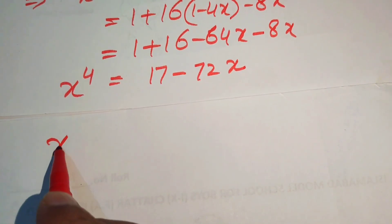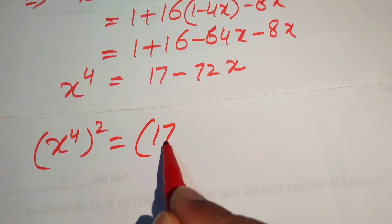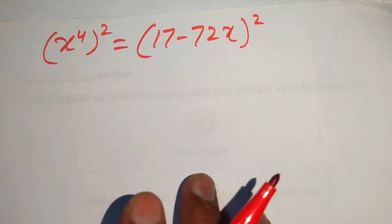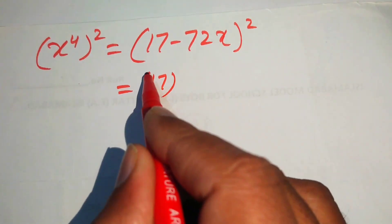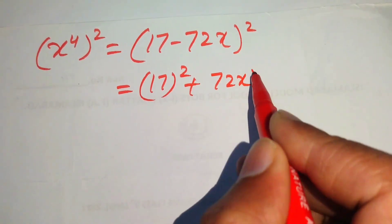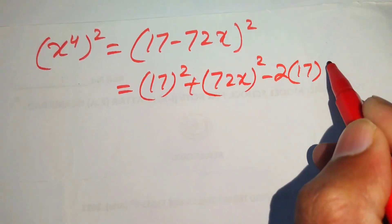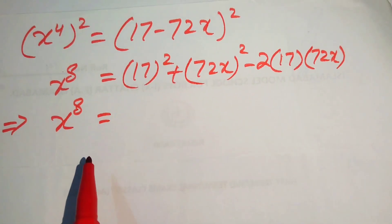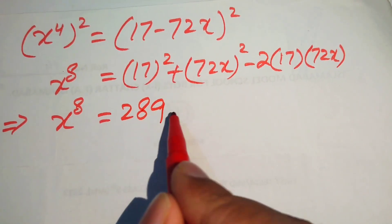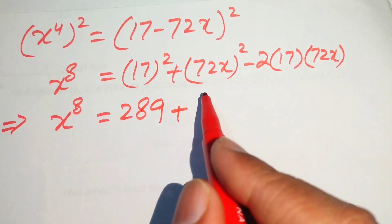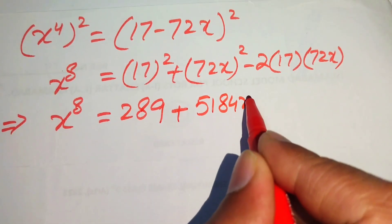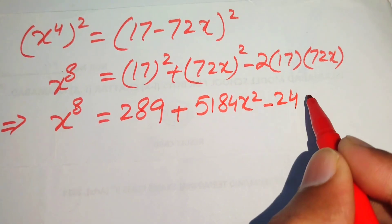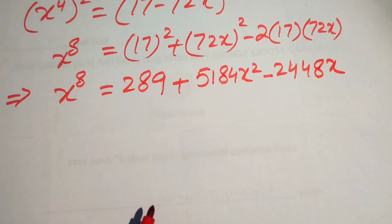To find x⁸ we square both sides of x⁴ = 17 − 72x, giving x⁸ = (17 − 72x)². Expanding: 17² + (72x)² − 2(17)(72x) = 289 + 5184x² − 2448x.